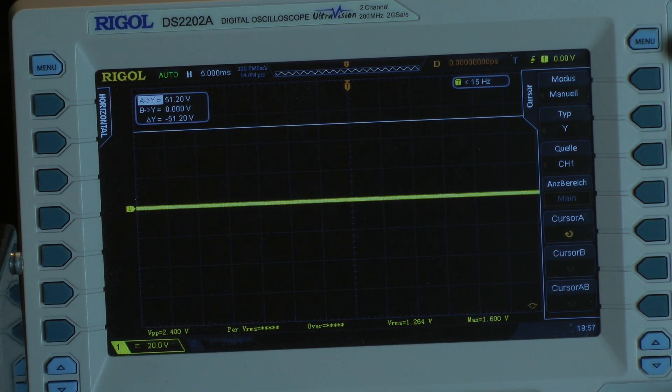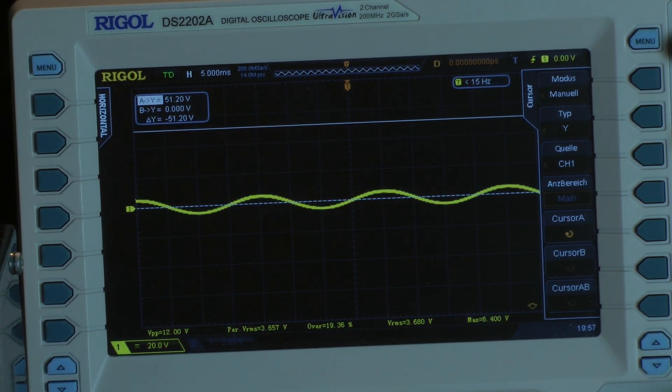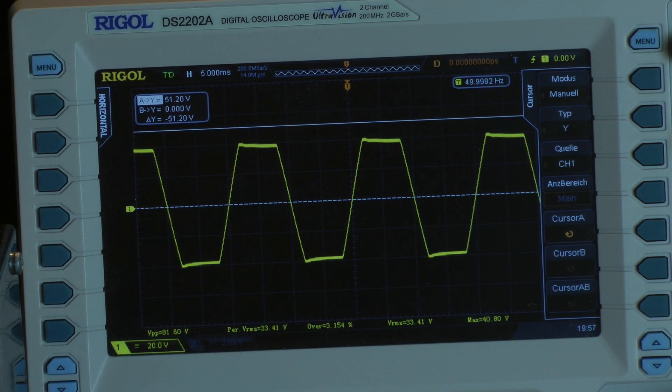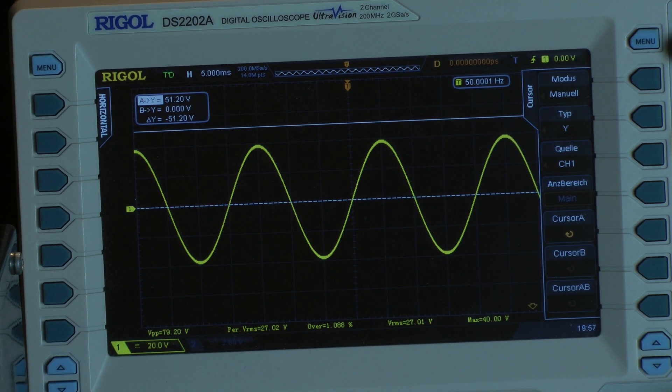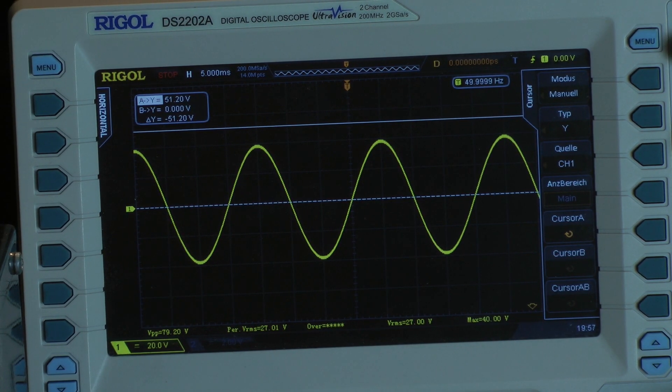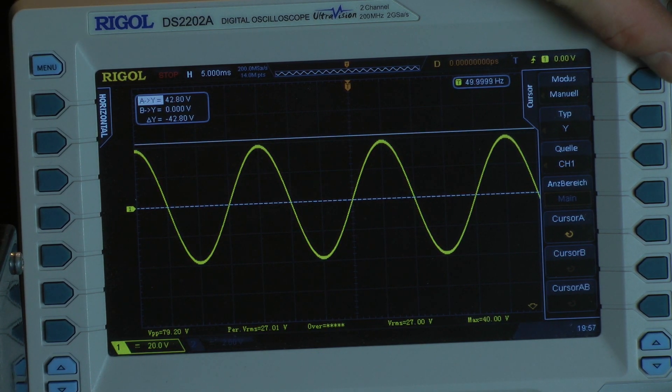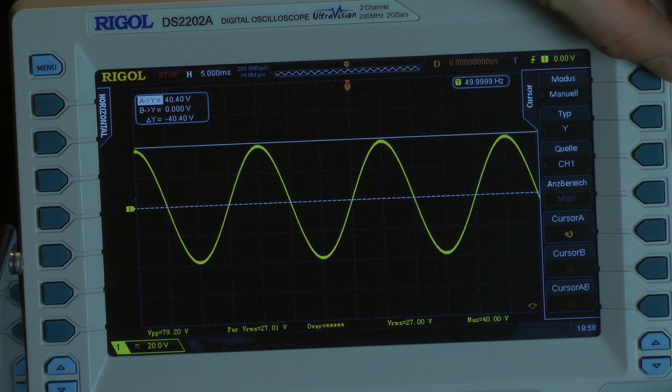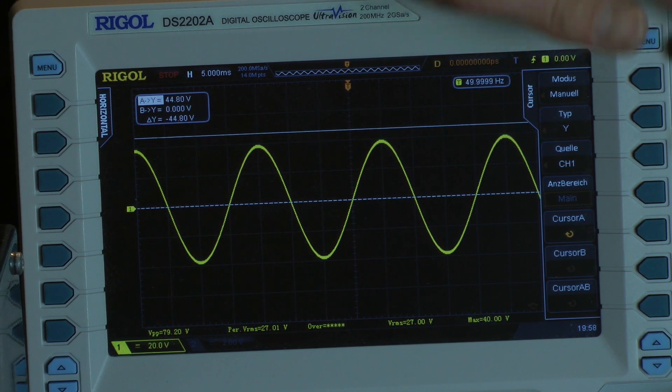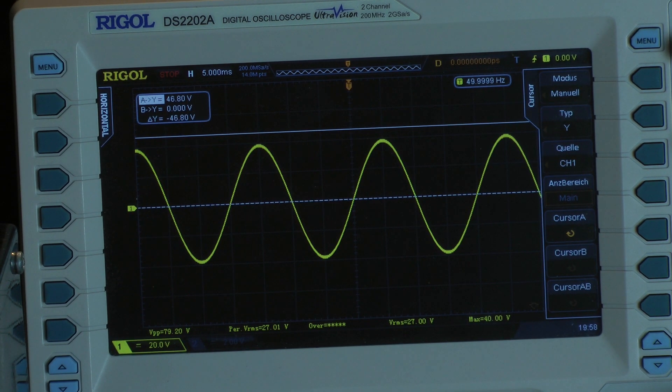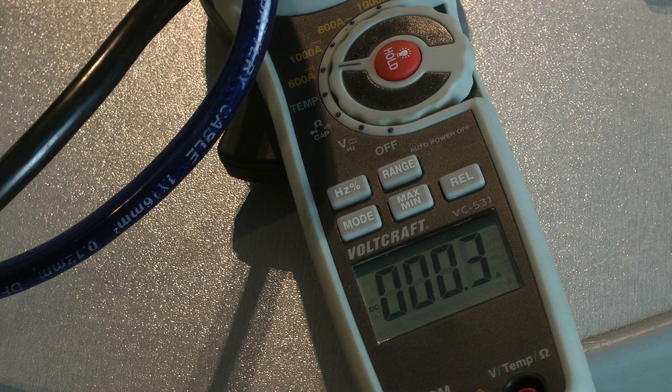The amplifier delivers 55 watts of continuous power into a 4 ohm load, both channels driven, 50 Hertz continuous power test. With a maximum voltage of 40 volts, the amplifier delivers 51 watts of continuous power into a 4 ohm load with a 50 Hertz signal.